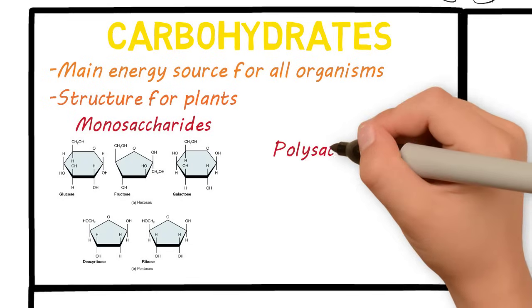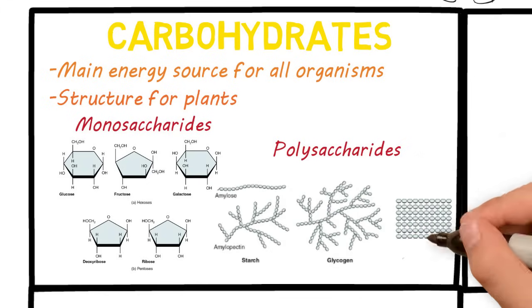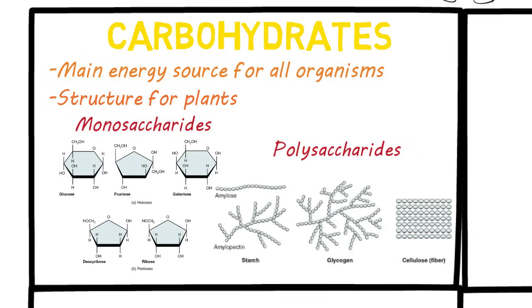The polymers are called polysaccharides, and they are long chains of monomers or monosaccharides. There are storage carbohydrates like starch in plants and glycogen in animals for energy storage, and then structural ones like cellulose in plants and chitin in insects.